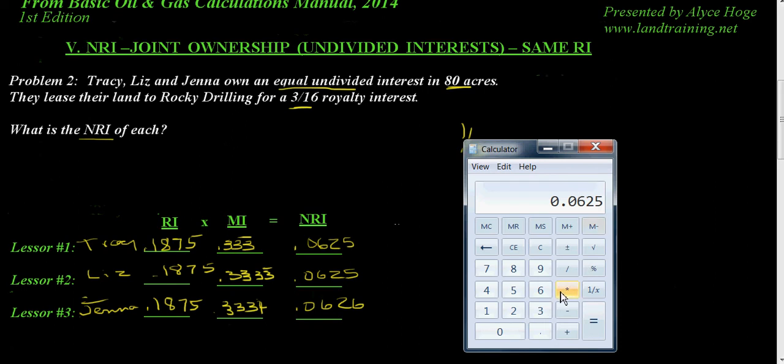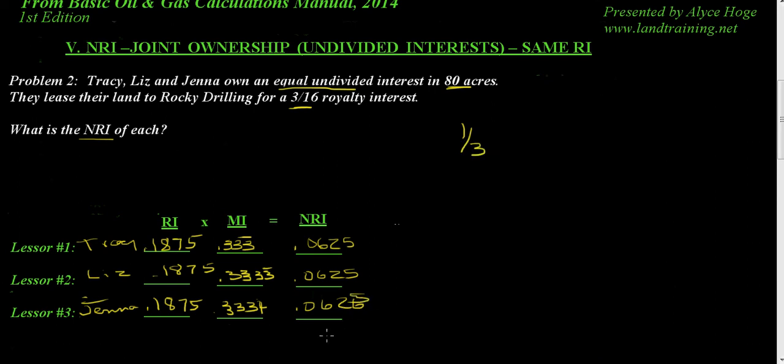If we multiply 0.0625 times three, we get the exact 0.1875, which is the same as three-sixteenths. So that's how you know it's correct. For right now, I just want you to recognize that if you have a royalty owner that owns with someone else as a co-tenant, that's going to reduce the amount of their royalty by their mineral interest percentage. So that's how we're getting these net revenue interests.